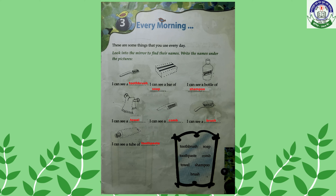Unit 3: Every Morning. These are some things that you use every day. Look into the mirror to find their names and write the names under the pictures. The first one — you have to write toothbrush. The next picture is a soap, so here you have to write soap.